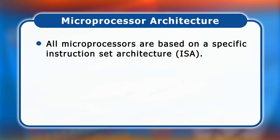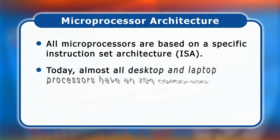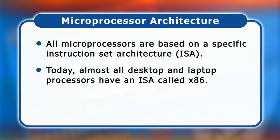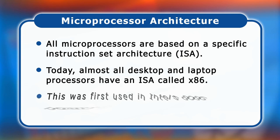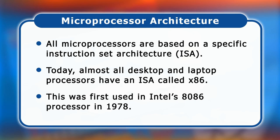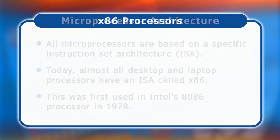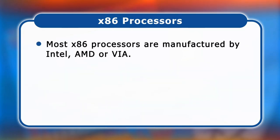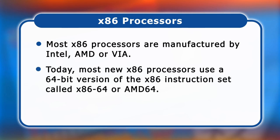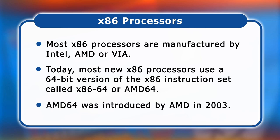All microprocessors are based on a specific instruction set architecture, or ISA, that determines how they function and what software they can run. Today almost all desktop and laptop processors have an ISA called x86, which was first used in Intel's 8086 processor launched in 1978. Since then, many x86 processors have come to market, manufactured mainly by Intel, AMD, or VIA. Today most new x86 processors use a 64-bit version called x86-64 or AMD64, introduced by AMD in 2003.